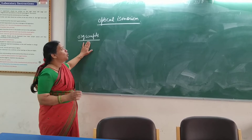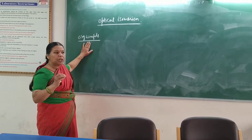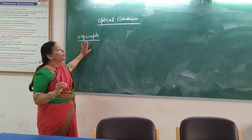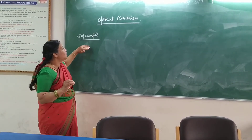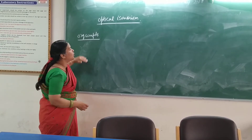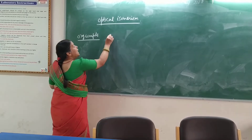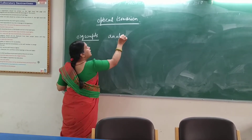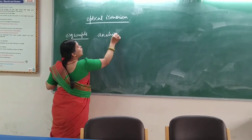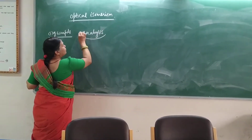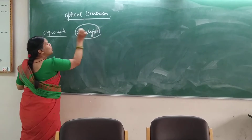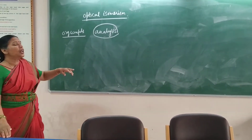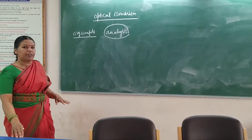We will start with these organic compounds. We will analyze the optically active components. Why? Only these compounds are going to rotate the plane polarized light, either to the right or to the left.